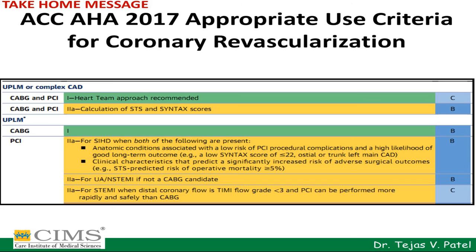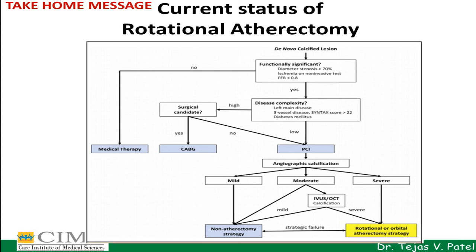In acute coronary events — unstable angina, non-ST elevation MI, or ST elevation myocardial infarction — PCI is preferable compared to CABG, because CABG in acute emergency conditions carries much higher risk and mortality. This is the current status of rotational atherectomy in any functionally significant calcified lesion. If the disease complexity is high and the SYNTAX score is high, those patients should be referred for bypass surgery.